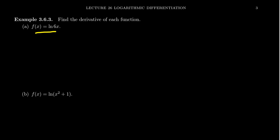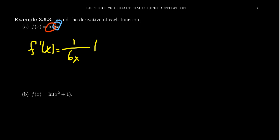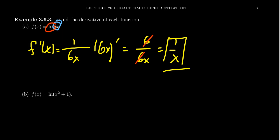Let's find the derivative of f(x) equals the natural log of 6x. The chain rule comes into play here because 6x is the inner function sitting inside the natural log. The derivative of the outer function gives 1 over the inner function, which is 1 over 6x. We multiply by the inner derivative, the derivative of 6x, which is 6. So we get 6 over 6x. Simplifying, the 6s cancel, and we end up with just 1 over x. So the derivative of the natural log of 6x is 1 over x — just like the derivative of the natural log.